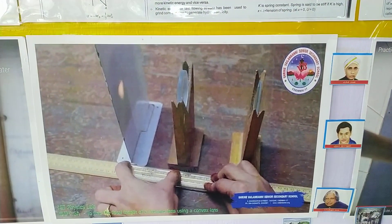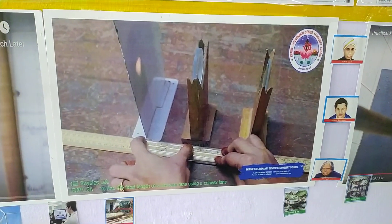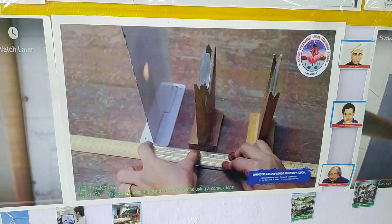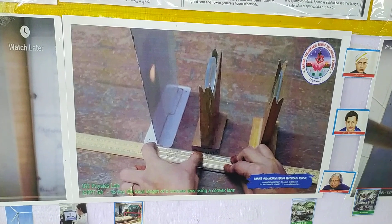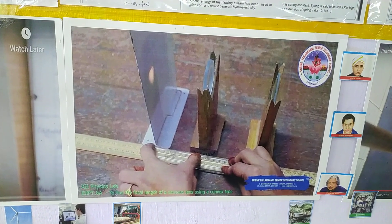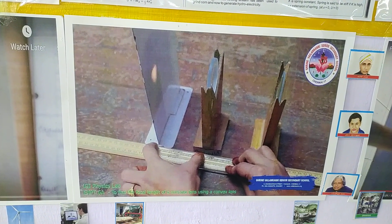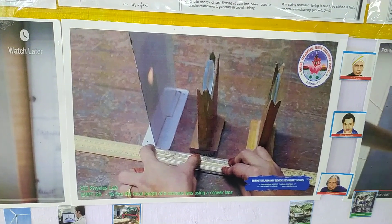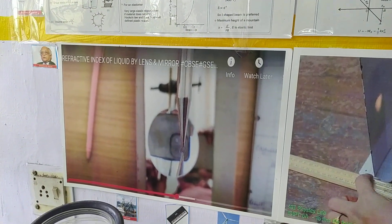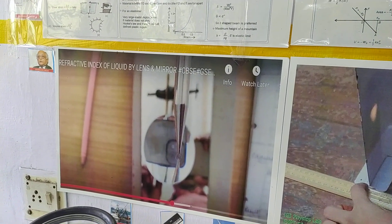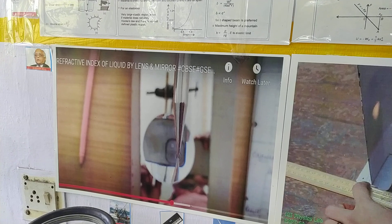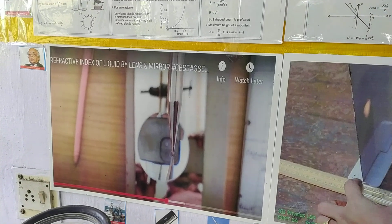By lens and mirror, here we find the focal length of the given convex lens using a concave lens. The last one is the refractive index of the liquid by lens and mirror. Thank you.